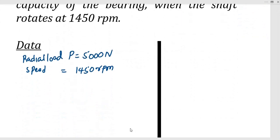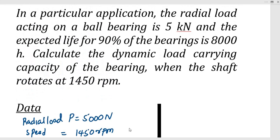Or revolutions per minute. So this is the number of hours that 90% of the group of bearings will complete before the first evidence of failure, while rotating at 1450 revolutions per minute and carrying a radial load of 5 kilonewtons.